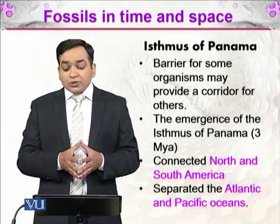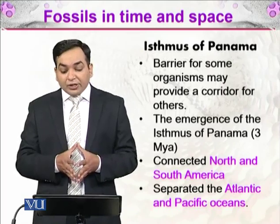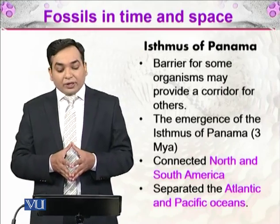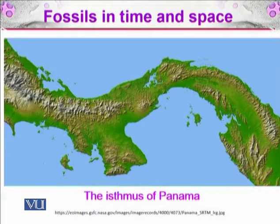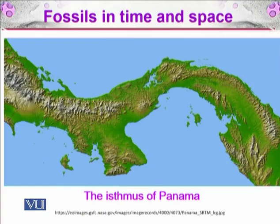The emergence of the Isthmus of Panama 3 million years ago connected North and South America and separated the Atlantic and Pacific Oceans. This resulted in different diversification in the oceans, while enabling an exchange of organisms between the two continents. That event is called the Great American Biological Interchange, or GABI, which will be discussed further in the biogeography section of the next part of this course.